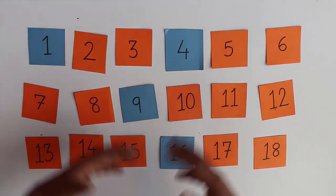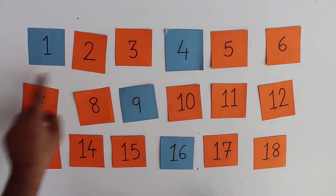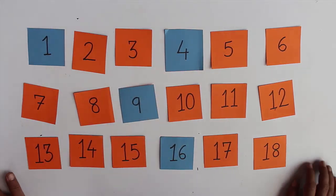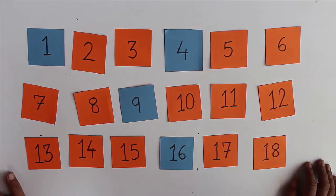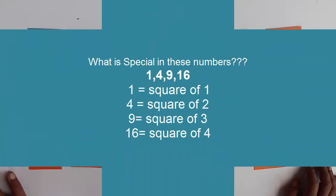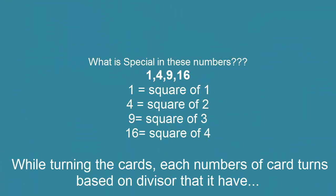So we started with all orange. Every card is back to orange except these four cards which turned blue. And there is something interesting about these numbers. You will see that these are all square numbers: 1, 4, 9, 16. That's the most interesting thing about this magic.